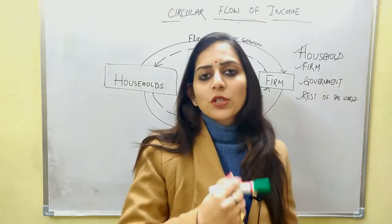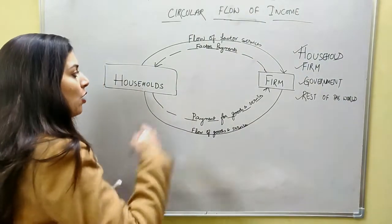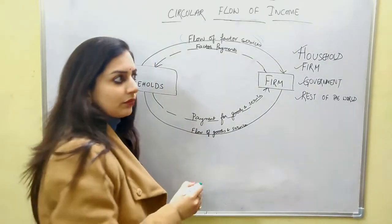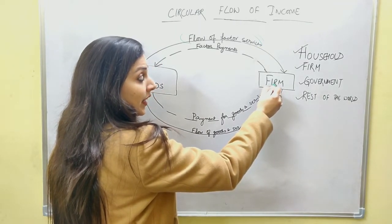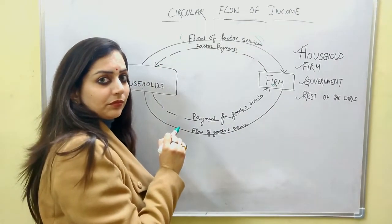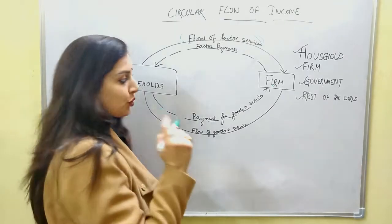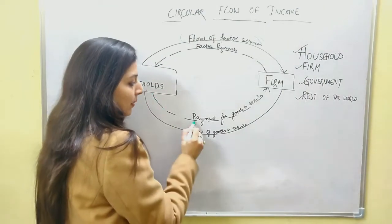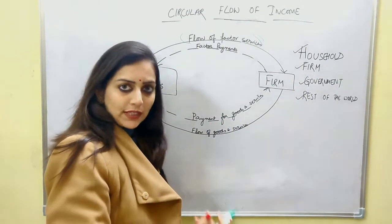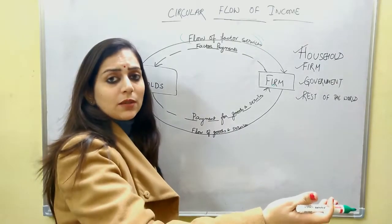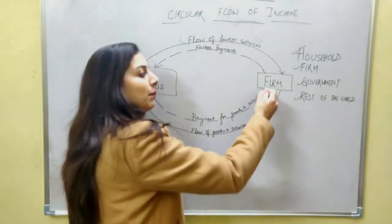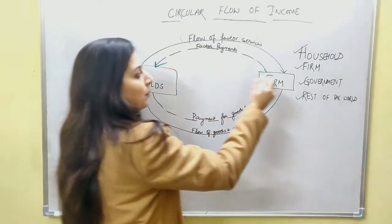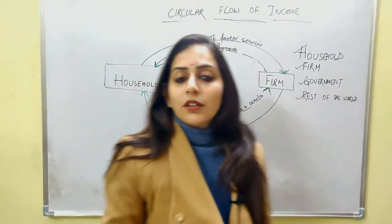So this is how you can remember the flows easily. The household gives its factor services to the firm, and the firm gives factor payments in return — that's one angle complete. The second angle: the money the household earned as factor payments is used for payment of goods and services. As I said, the money you earn goes to another firm or the same business unit, because you want to buy goods and services from them. You make payment and in return you get the flow of goods and services. These are the simple flows you need to remember, and the two sector model is complete.